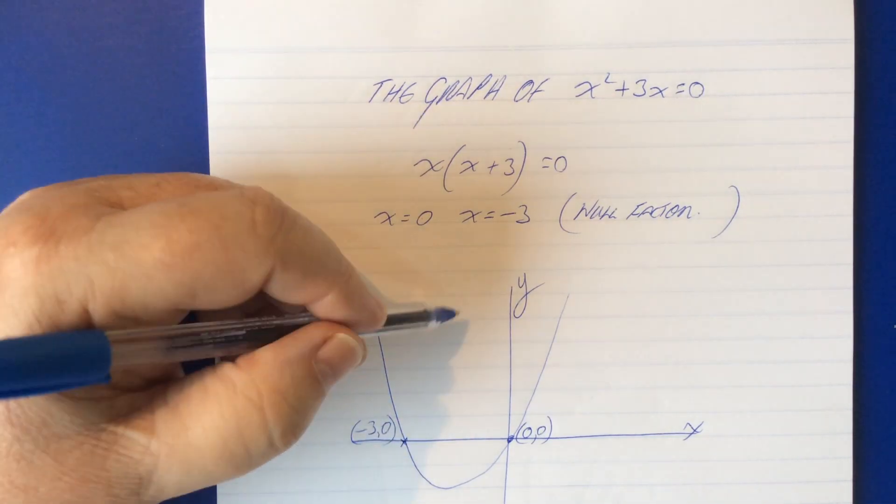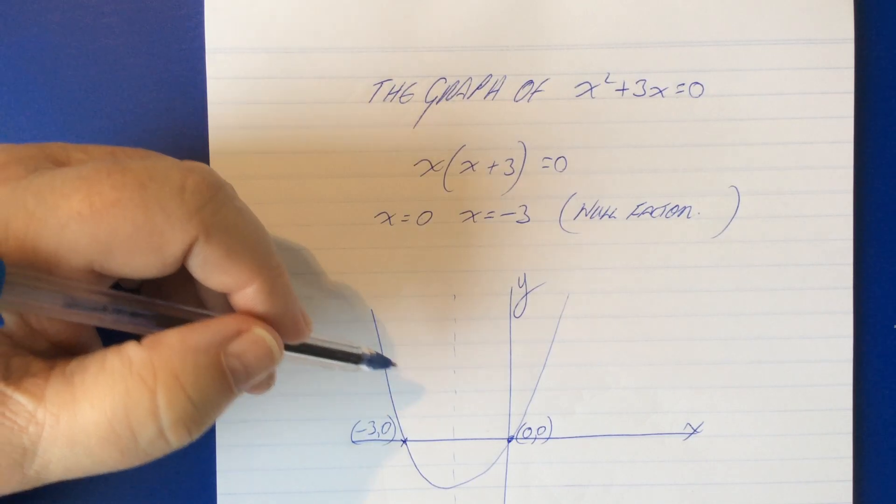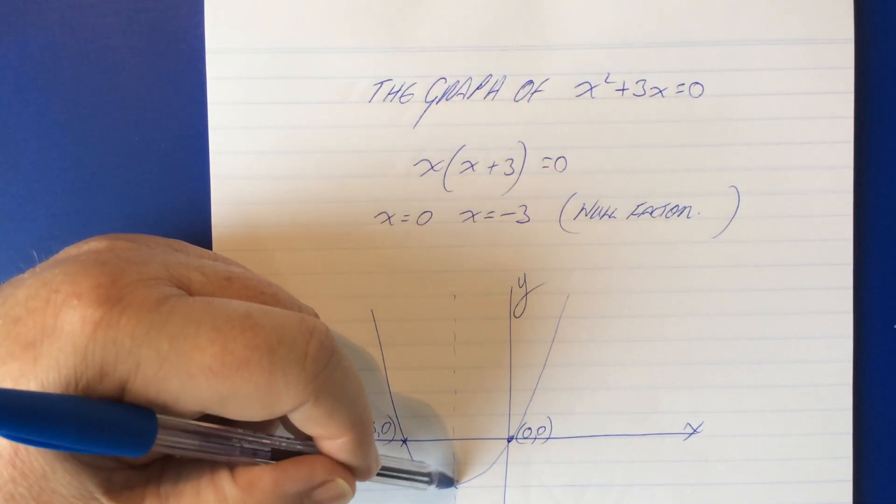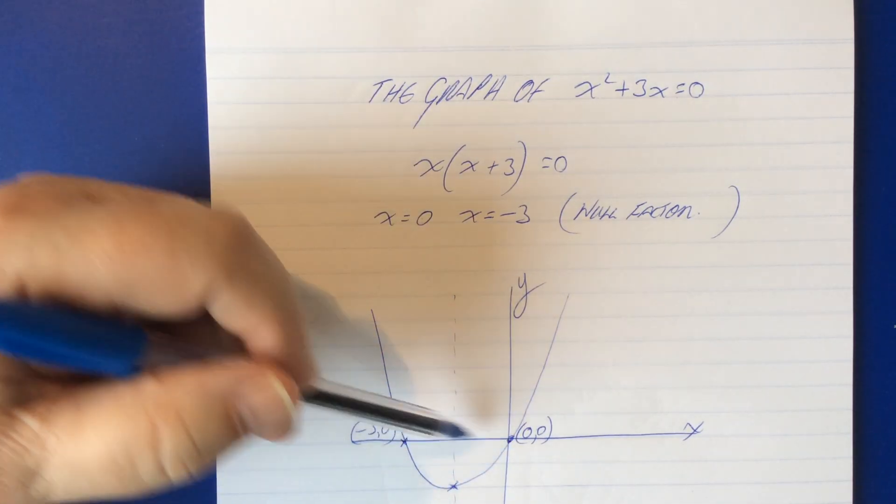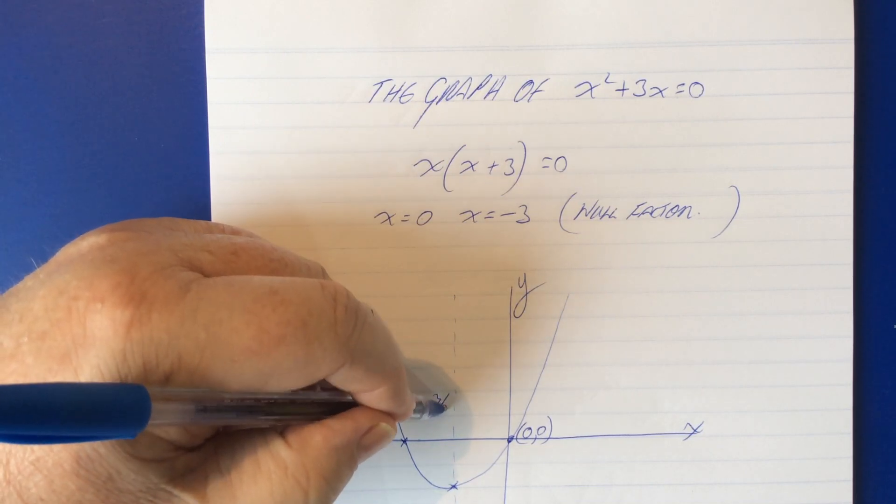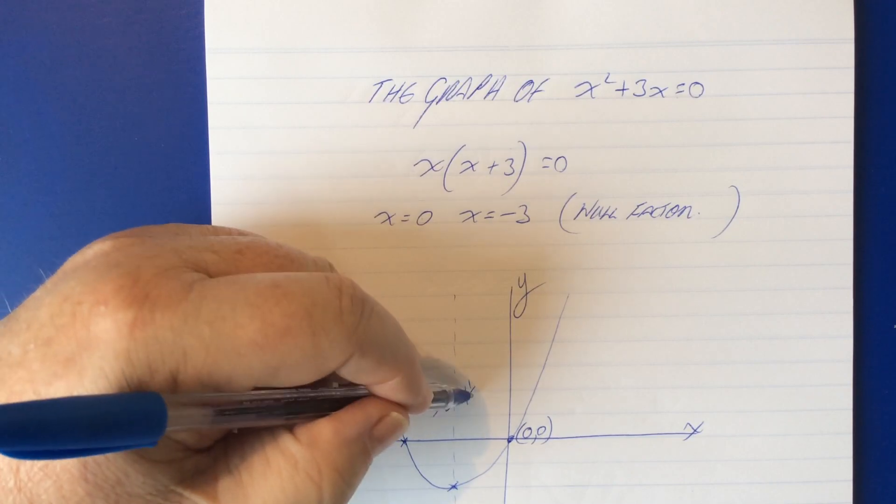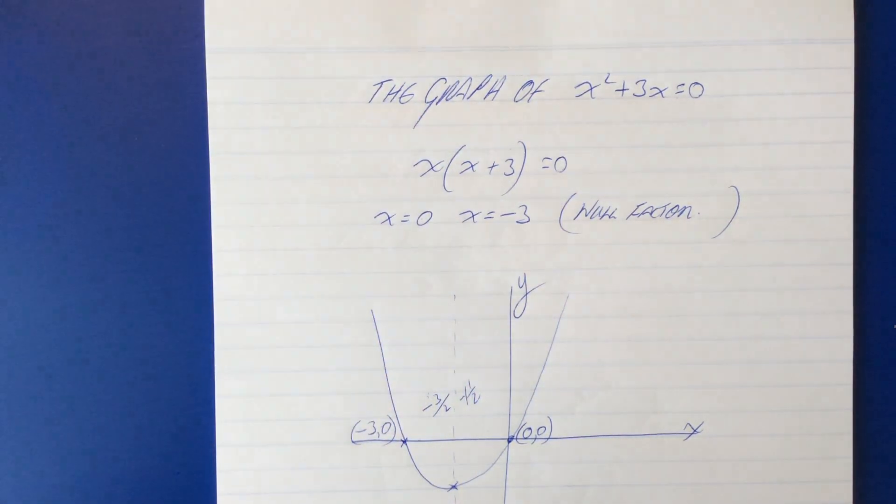So the next thing that we need to do is we need to find the axis of symmetry which will give us the x coordinate of the turning point which is here despite my poor drawing and halfway between here and here is negative three over two or negative one and a half. Take your pick but this is probably easier to deal with.